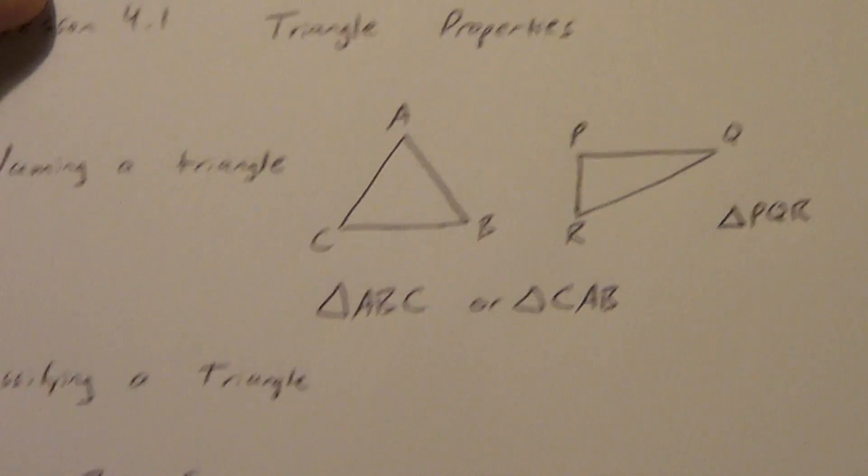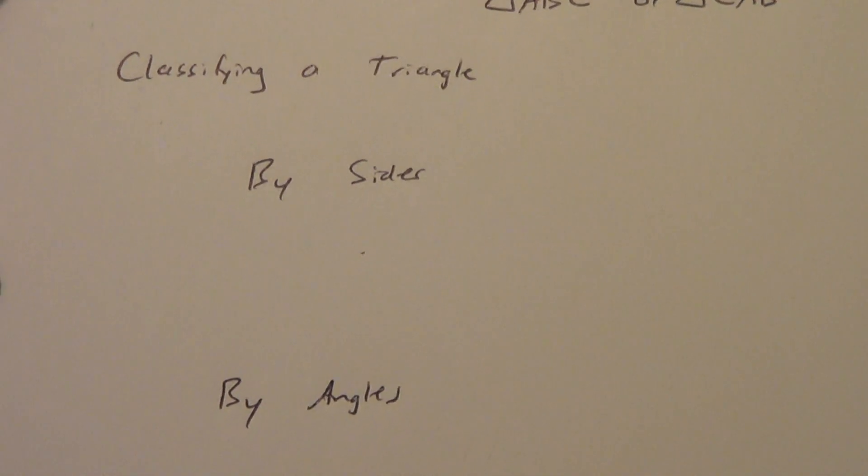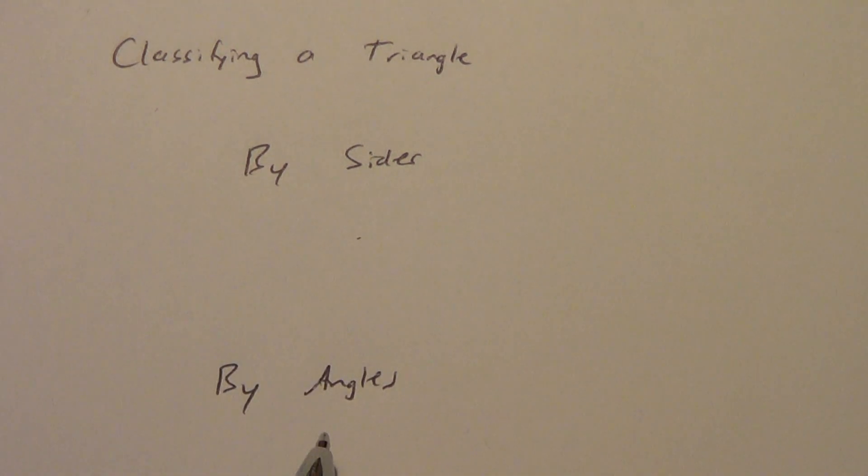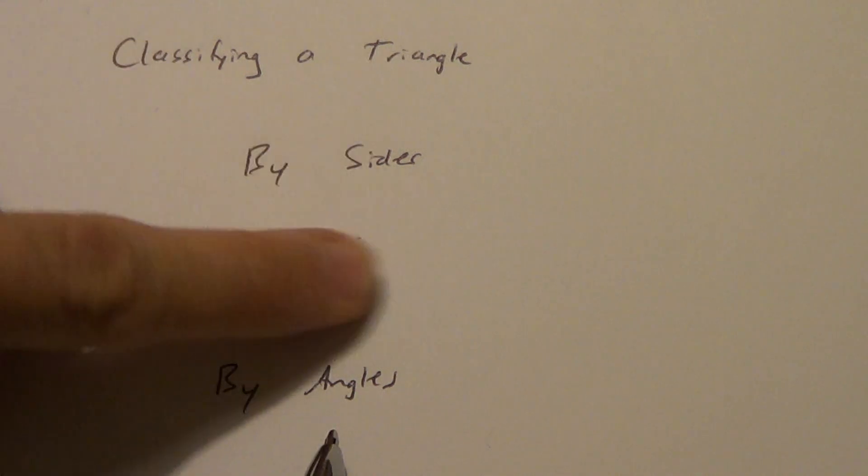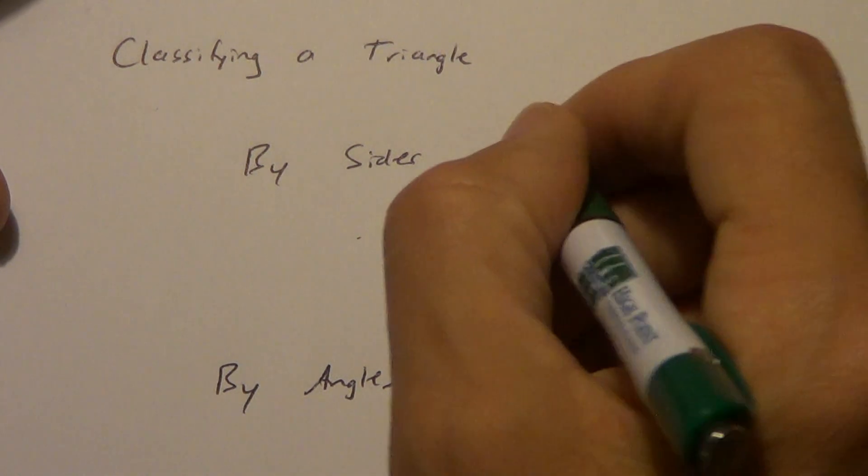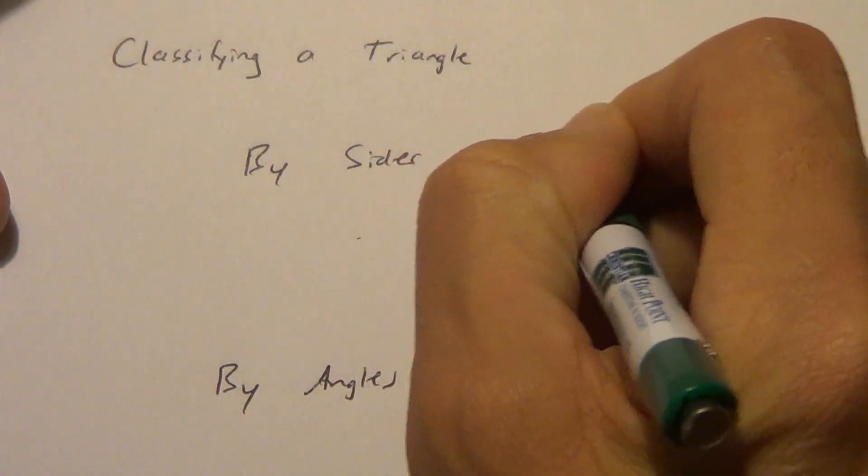Okay, next, classifying a triangle. We can do that two different ways. We can do it by its sides. We can do it by its angles. So these are some terms that you probably already know. Okay, but good to review. And just in case you don't know one of them, that would be something you learned.